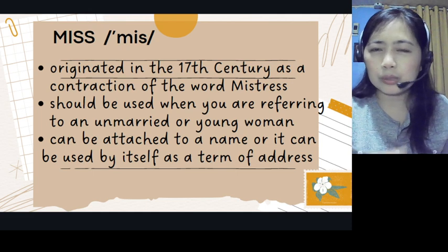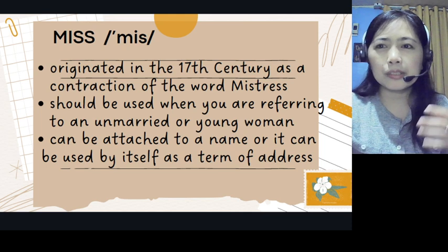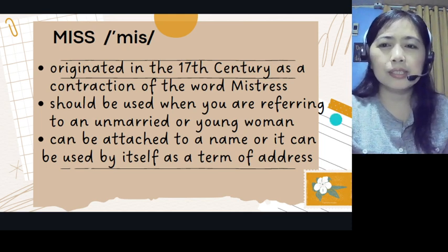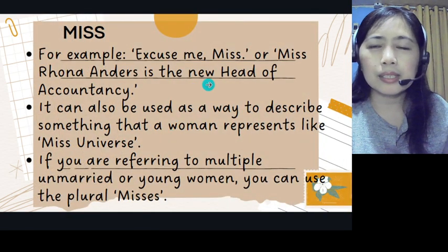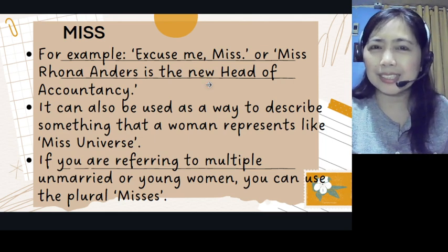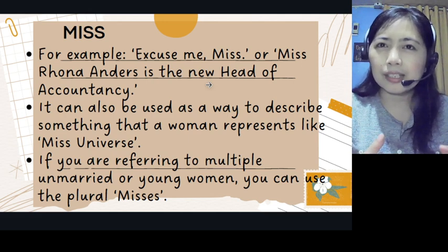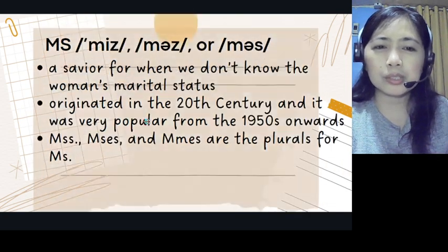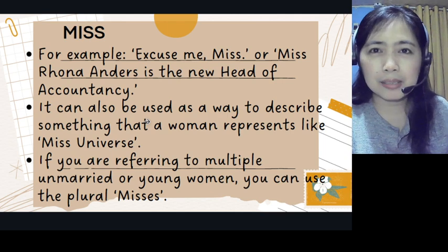If you wish to address someone and you know that person is an unmarried young woman, then it's very safe to use the word Miss, M-I-S-S. For example: 'Miss Rona Anders is the new head of accountancy.' So we can assume that Rona Anders is a young and unmarried woman. It can also be used to describe something a woman represents, like Miss Universe.